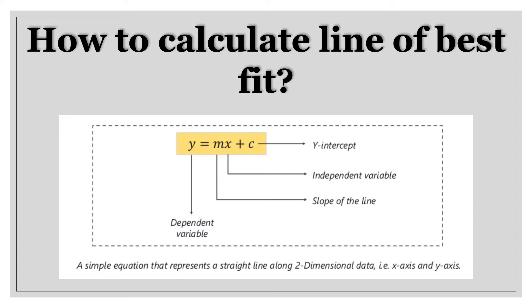If we consider the earlier example of sales of ice cream, x would have been temperature because it was your independent variable, and y would have been sales of ice cream because it was your dependent variable. x is commonly known as your predictor variable because it helps you predict y, and y is the target variable which you have to predict. There are three steps involved to calculate line of best fit — we will look at all of them one by one in detail.